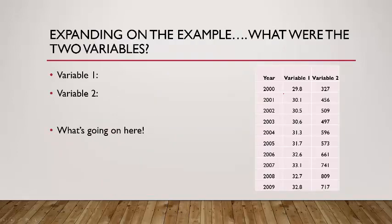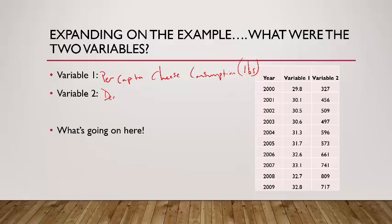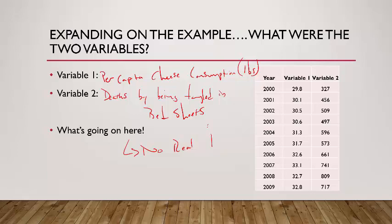Now let me tell you what the variables actually are. This is time series data by year. Variable 1 is per capita cheese consumption in pounds — for example, in 2000 Americans consumed on average 29.8 pounds of cheese, rising to 32.8 pounds by 2009. Variable 2 is the number of deaths by being tangled in bed sheets. Do you think there's an actual real relationship between cheese consumption and bed sheet deaths? There's no real relationship here.